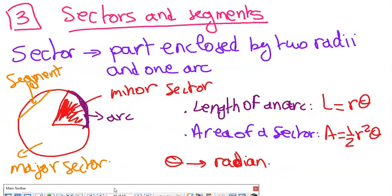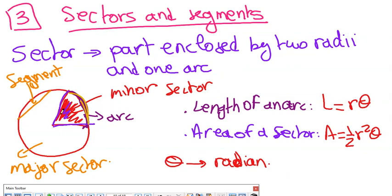Part 3: sectors and angles. A sector is a part of a circle enclosed by two radii and one arc. The smaller part is called the minor sector, and the larger part is the major sector. Similarly, arcs can be minor or major. The formula for arc length is rθ, and the area of a sector is ½r²θ. Note: θ must always be in radians.